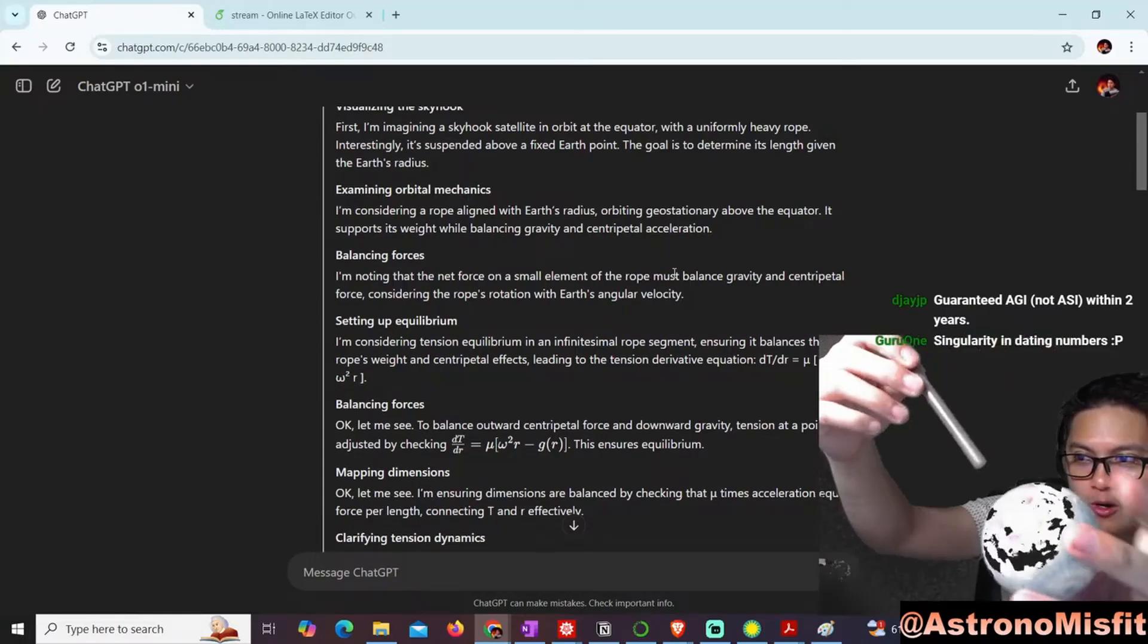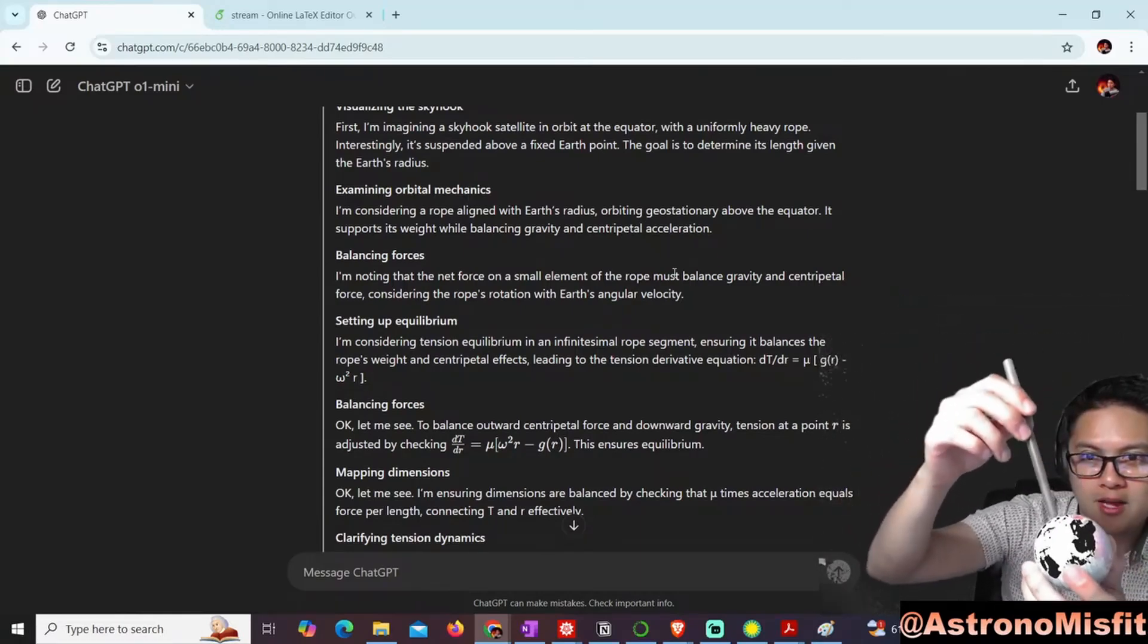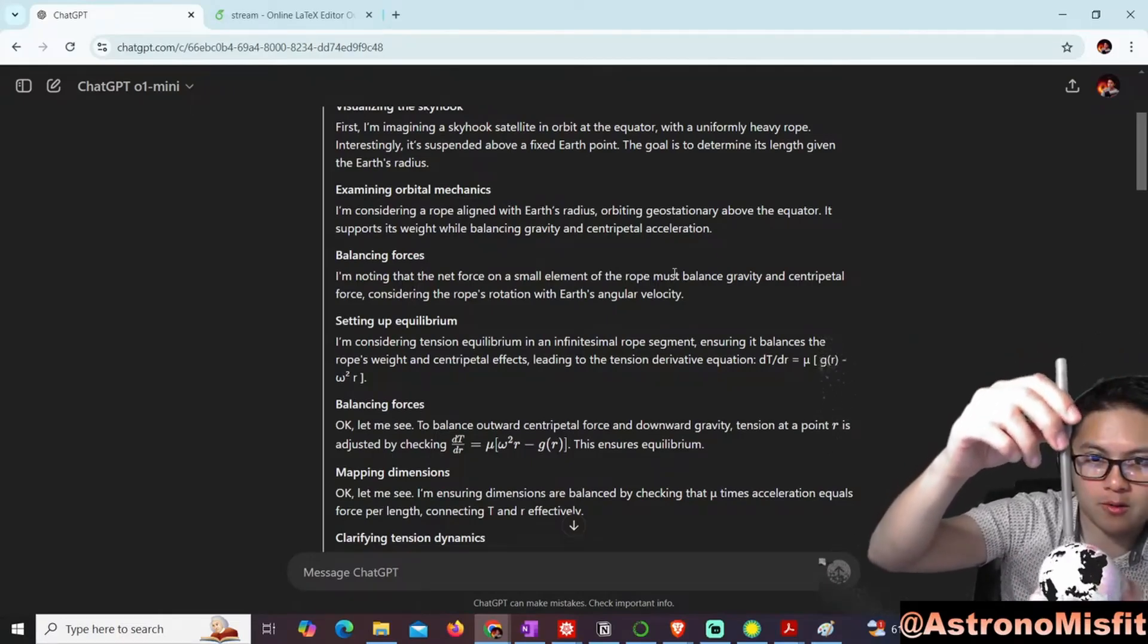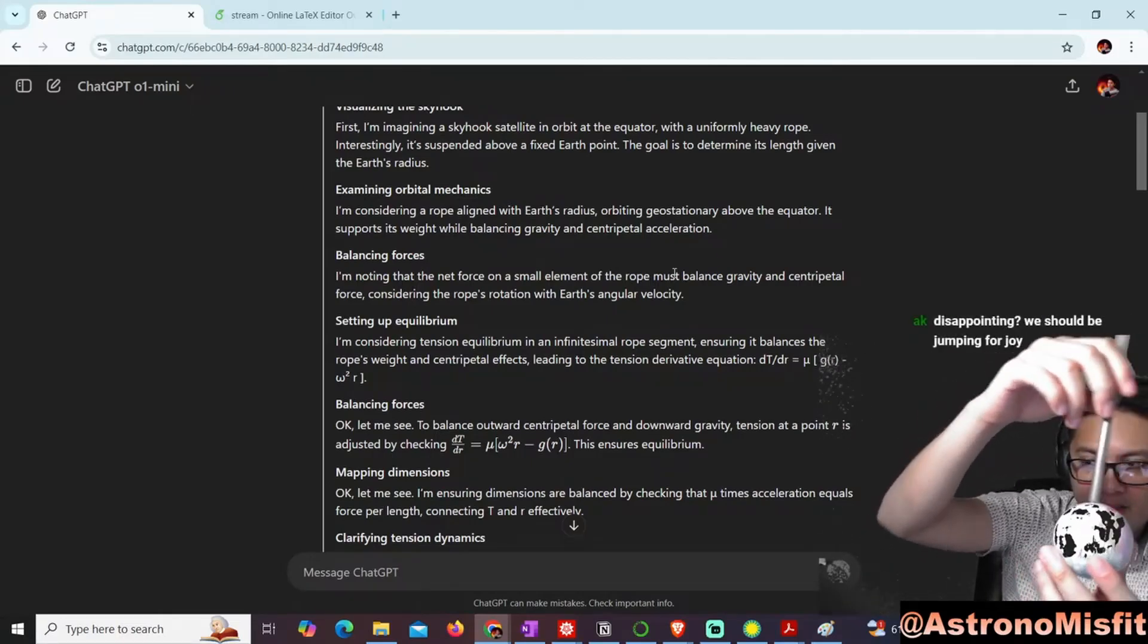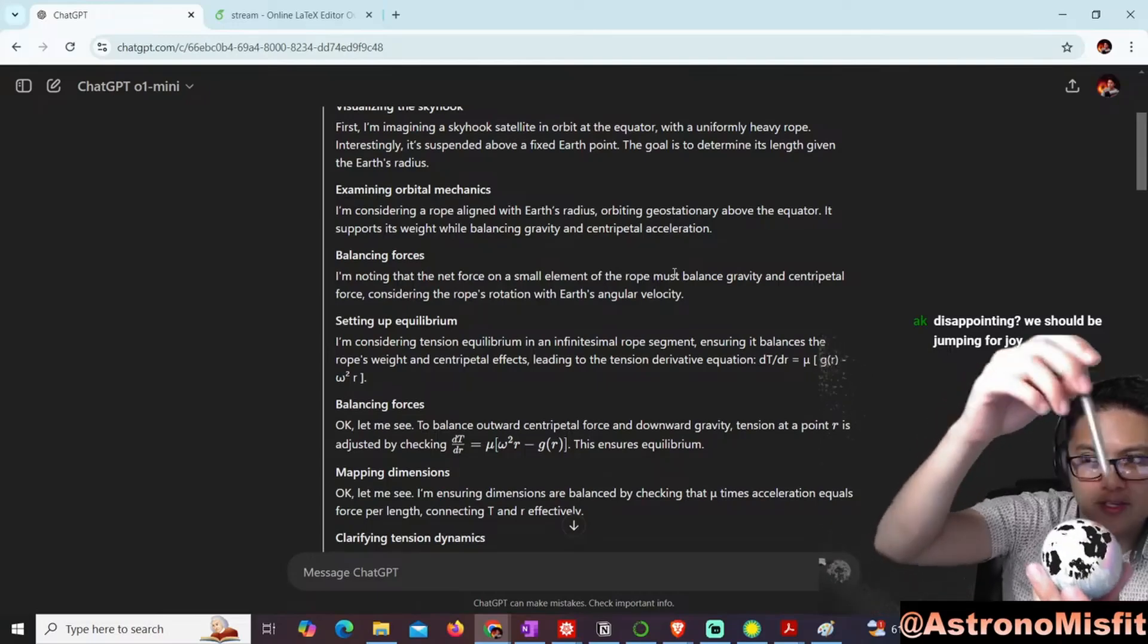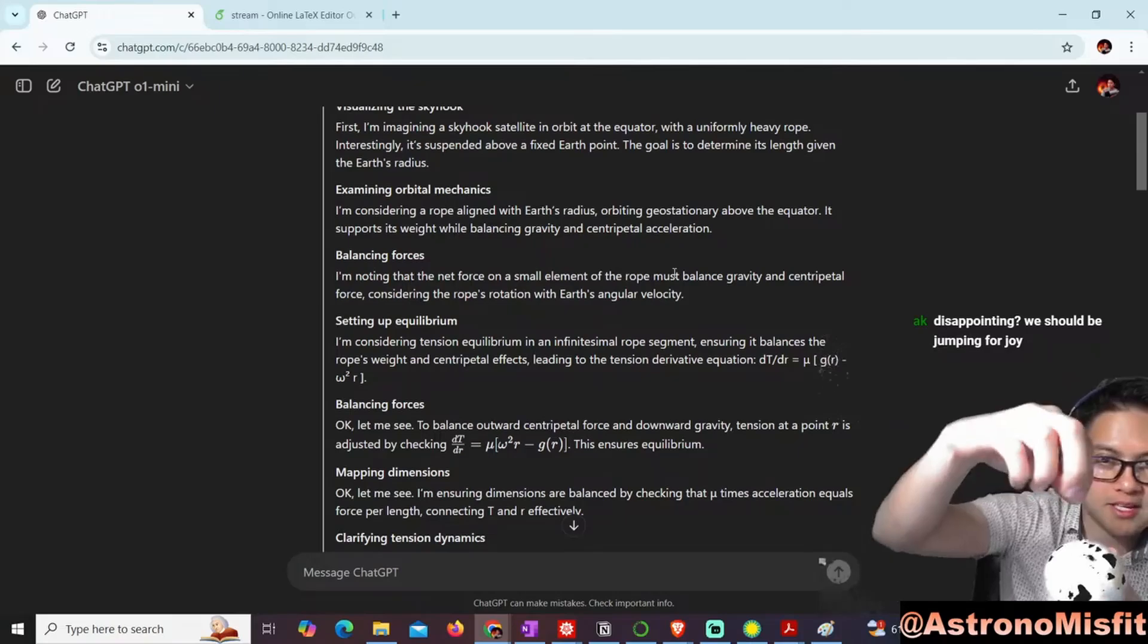You have to imagine the Earth like this, and the green screen is messing it up, but it's like this thing that's rotating with the Earth, kind of like this over the equator. And it's not taking into account the extended mass distribution of this rope. It's thinking it's just like a point orbiting like that, but it's not.